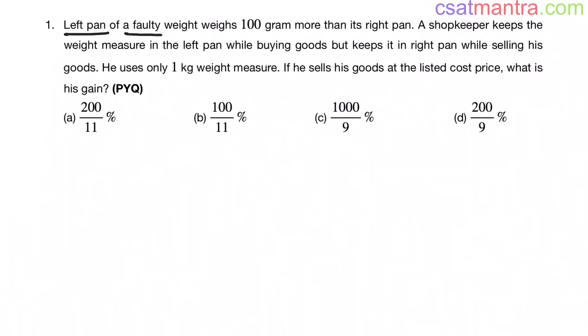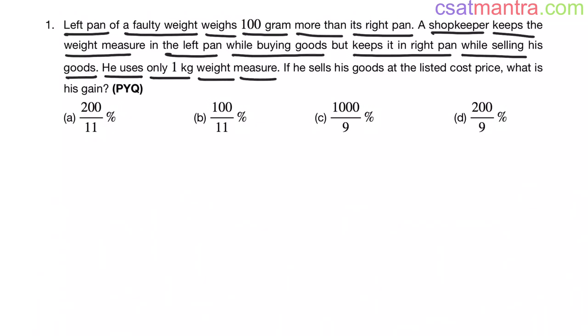Left pan of a faulty weight weighs 100 grams more than its right pan. A shopkeeper keeps the weight measure in the left pan while buying goods but keeps it in right pan while selling his goods. He uses only 1kg weight measure. If he sells his goods at the listed cost price, what is his gain? This is a previous year question from profit and loss chapter.